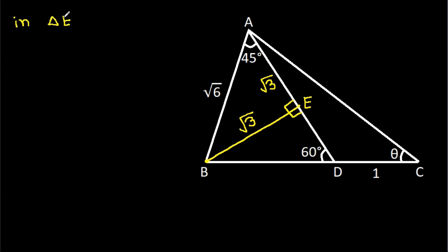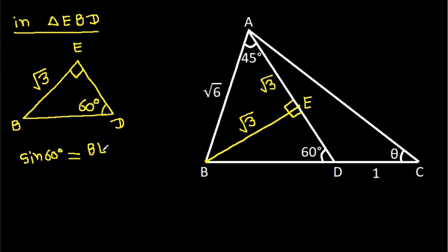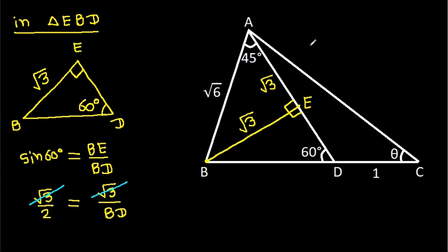Now in triangle EBD, this angle is 90 degrees and this angle is 60 degrees. So sin 60° = BE/BD, which gives √3/2 = √3/BD. The √3 cancels, so we get BD = 2.